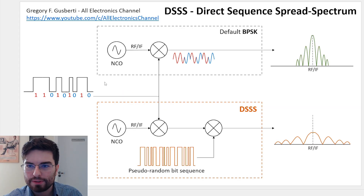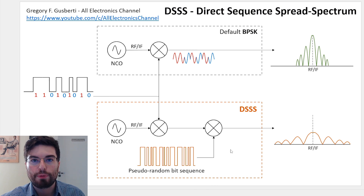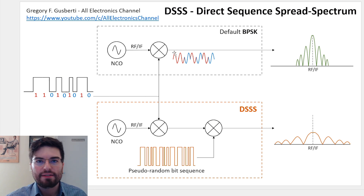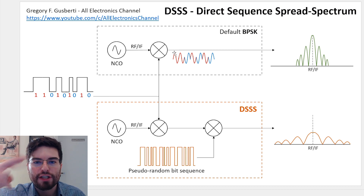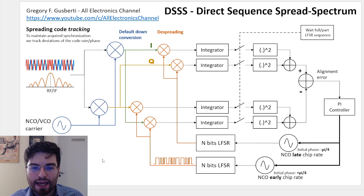First, let's look at what a spread spectrum system is. Here I have an example of a BPSK modulator and its counterpart, the spread spectrum BPSK modulator. The emphasis of this video is the demodulation process. In the standard BPSK example, an NCO generates the RF or IF signal, and a mixer modulates it with the bit stream directly — swapping the phase 180 degrees whenever a zero is transmitted. So here we have one, one, zero, one, zero, one, zero — this is a default BPSK modulation.